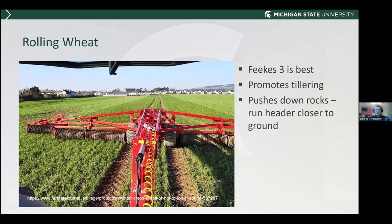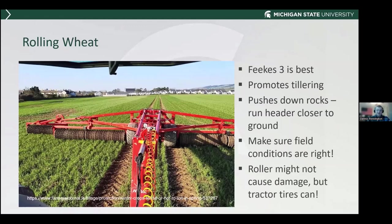The other reason people are rolling is it's a poor man's rock picker — it pushes down rocks so they can run the header closer to the ground, usually for folks that are baling straw. The biggest concern is field conditions. Look at the tractor tire damage in the picture — you can see it all the way to the other end of the field. An implement that's 25 to 30 feet wide will create tire tracks every 25 to 30 feet, wiping out about a foot or foot and a half of wheat and causing significant yield reduction.